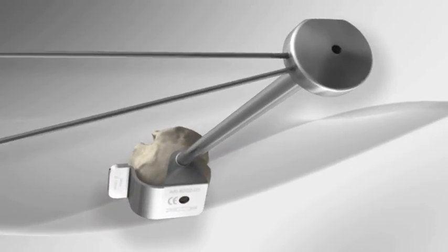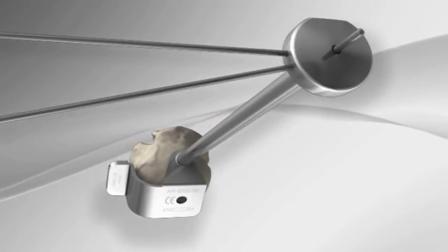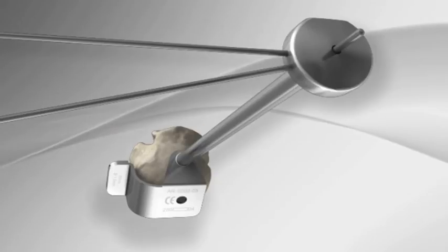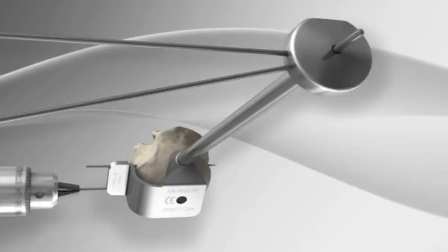A cutting guide is placed on top of the humeral head. A guide wire is then placed into the bone through the guide to prevent slippage. Two pins are then drilled into the humeral head through the guide to determine alignment of the cut.